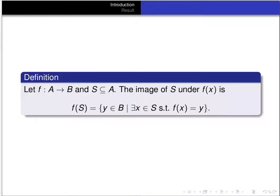First let's recall some definitions. Let's suppose f is a function from A to B and S is a subset of A, so a subset of the domain. The image of S under the function f is defined to be the set of all y in B such that for some x in S, f of x is equal to y. We denote the image of S under f as f of S.